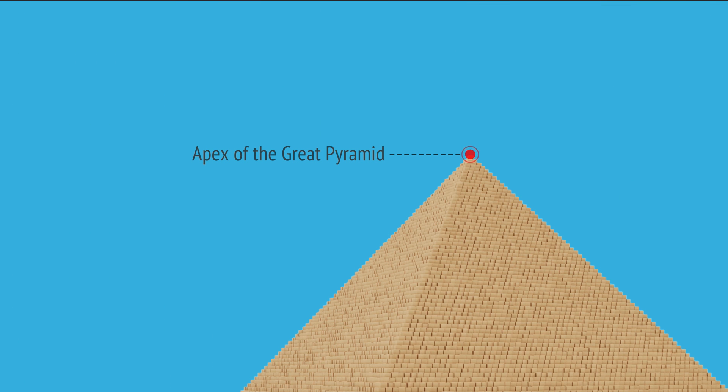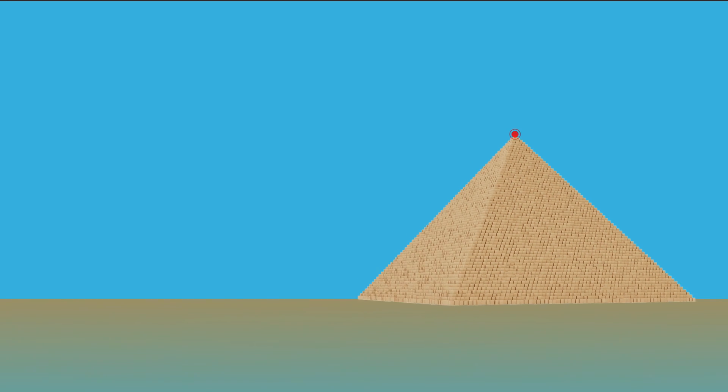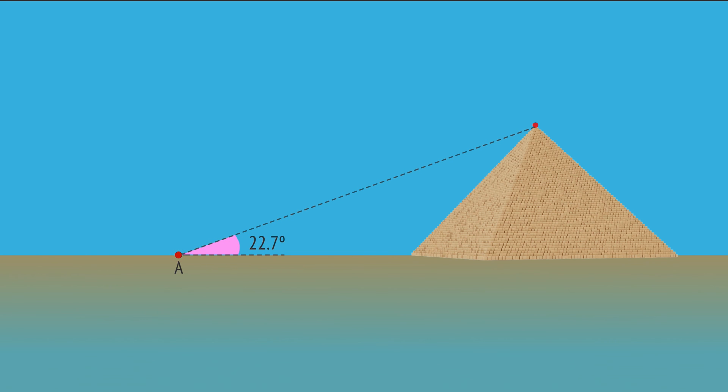In this last example, two observers are looking at the apex of the Great Pyramid. One observer sees the apex at a 22.7 degree angle of elevation. The other observer, 110 meters closer to the pyramid, sees the apex at a 32 degree angle of elevation. How can we use this information to calculate the height of the pyramid?